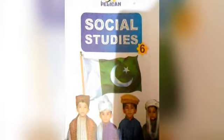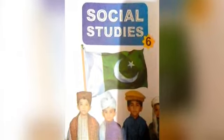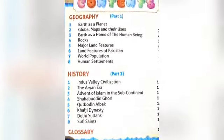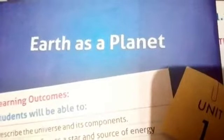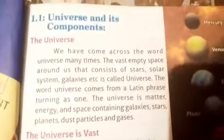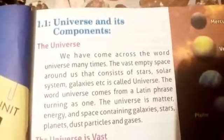This is your SST book for grade 6, Geography Part 1. First chapter: Earth as a Planet. Today your first chapter is Earth as a Planet. Now we will do the reading and explanation of this chapter. First, section 1.1: Universe and its components.